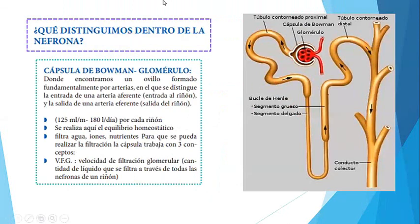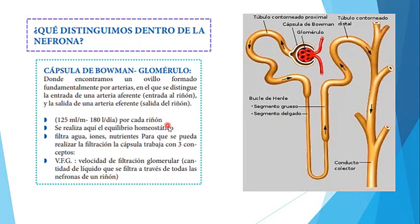El tema de hoy consta en esto, chicos. Vamos a ver qué distinguimos dentro de la nefrona. La nefrona es la unidad funcional de los riñones. Cada riñón consta de millones de nefronas. Esta es la estructura de una nefrona. Dentro de una nefrona está la cápsula de Bowman y el glomérulo.